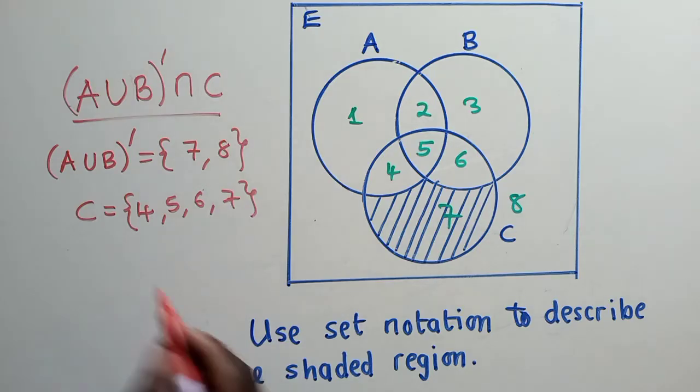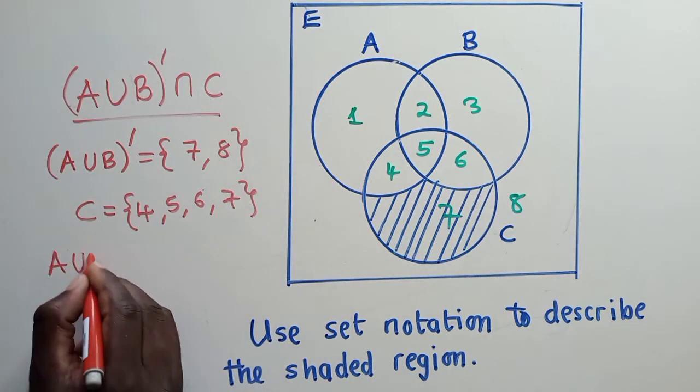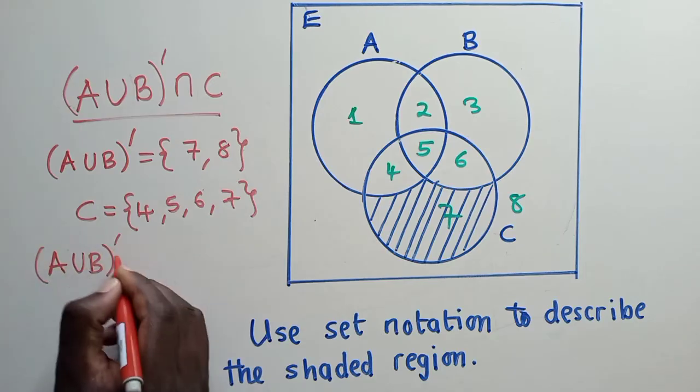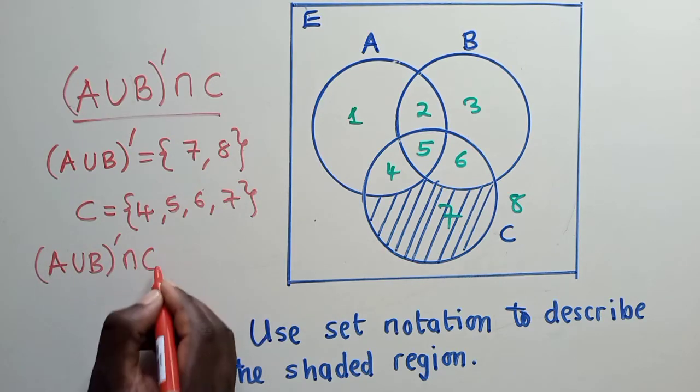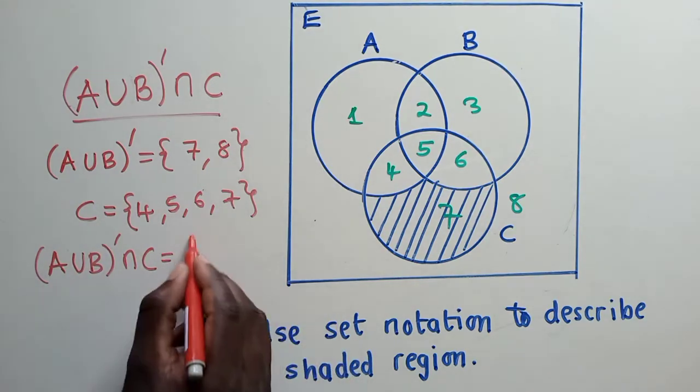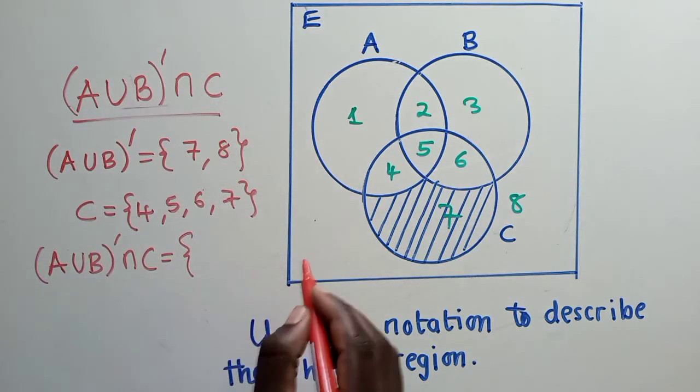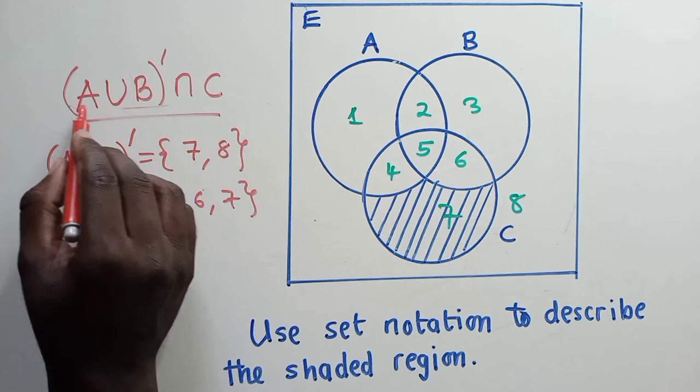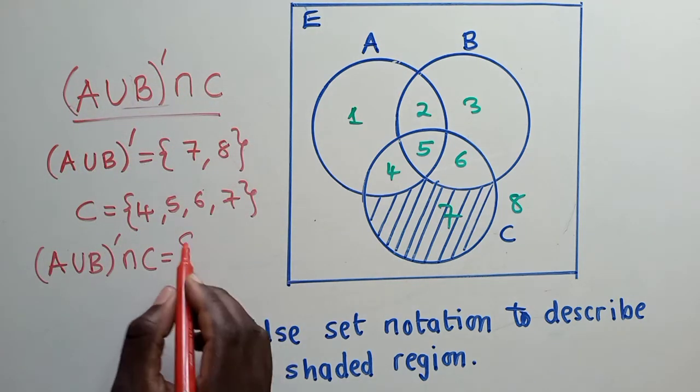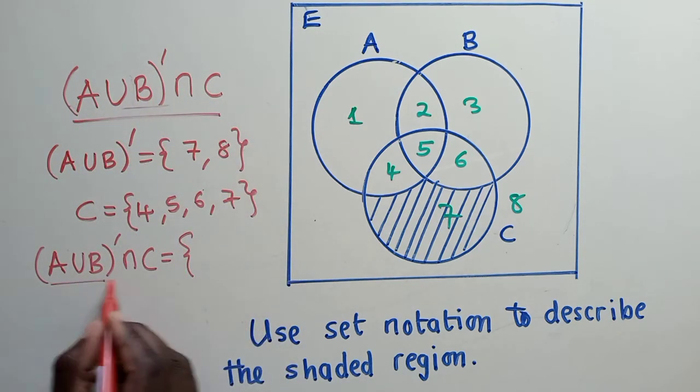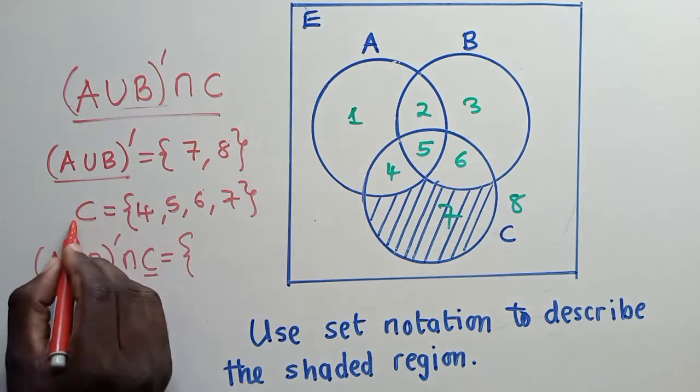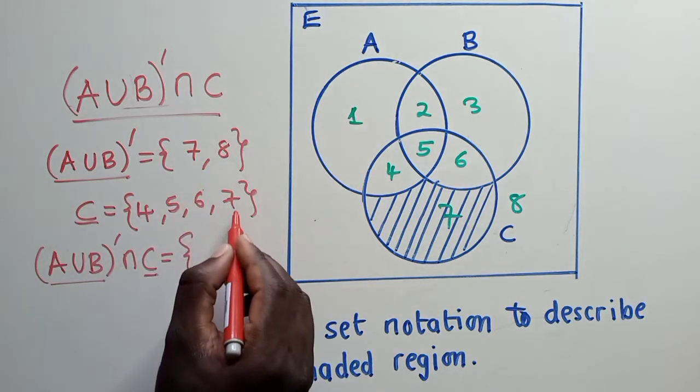So now let's try to find A union B complement intersect C. What is this? I'm just getting this. We want to find out if really our answer is A union B complement intersect C. So if you can see the intersection of this and this, we're talking about this and this.